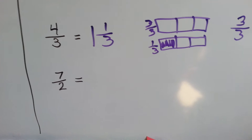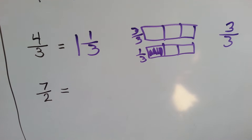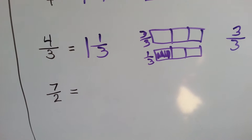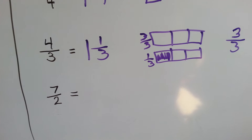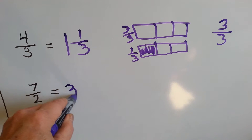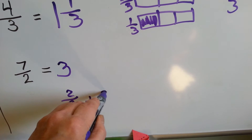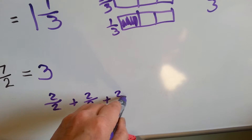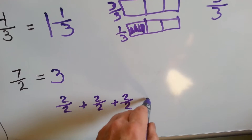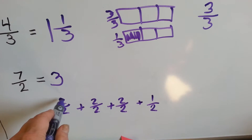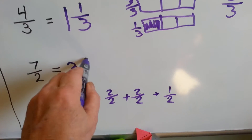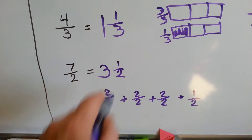How about this one? This is going to be bigger than one. How many times can two fit into seven? Two times one is two, two times two is four, two times three is six, two times four is eight — eight is too big, so we have to go back to three. So we know there's three whole ones, and how much do we have left over? We have a little half left over — seven over two. So seven halves is equal to three and a half.